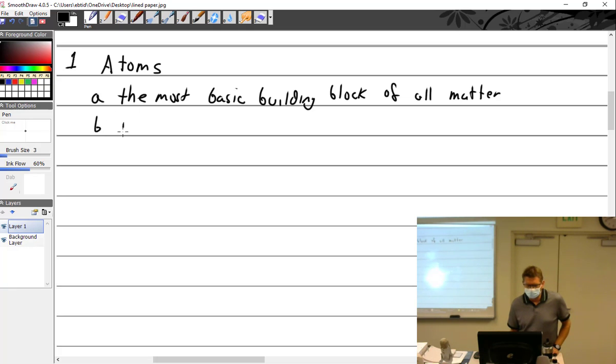All right, they consist of three subatomic particles. Subatomic, meaning smaller than atomic, smaller than the atom. A-T-O-M-I-C particles. Particles, which are the protons, neutrons.